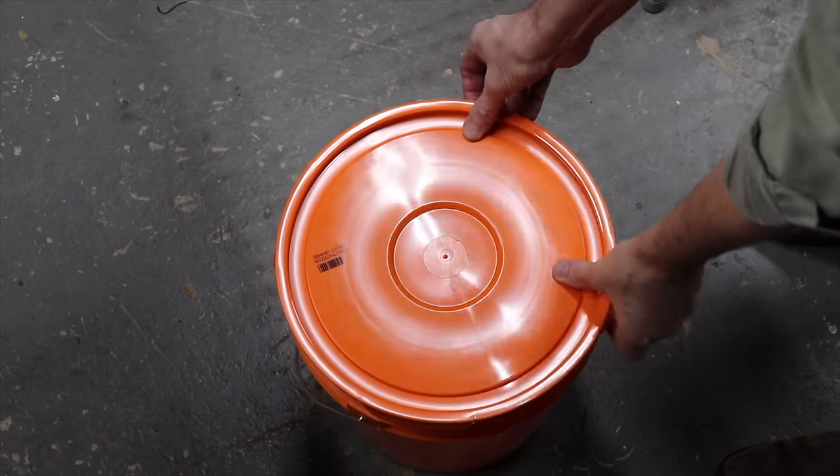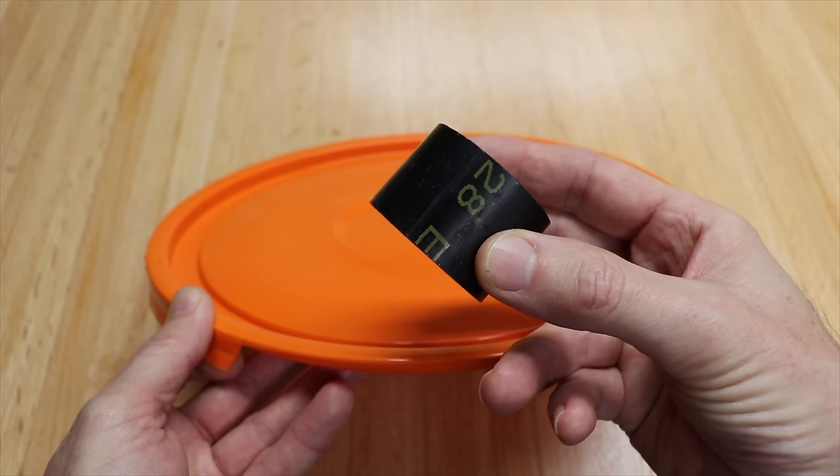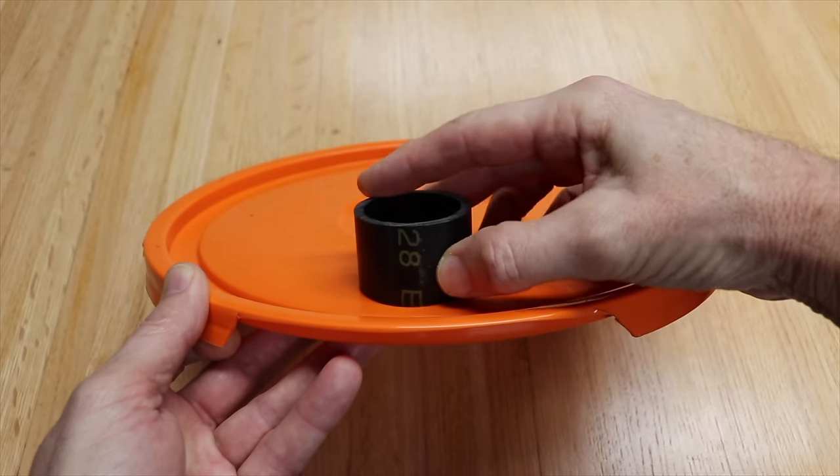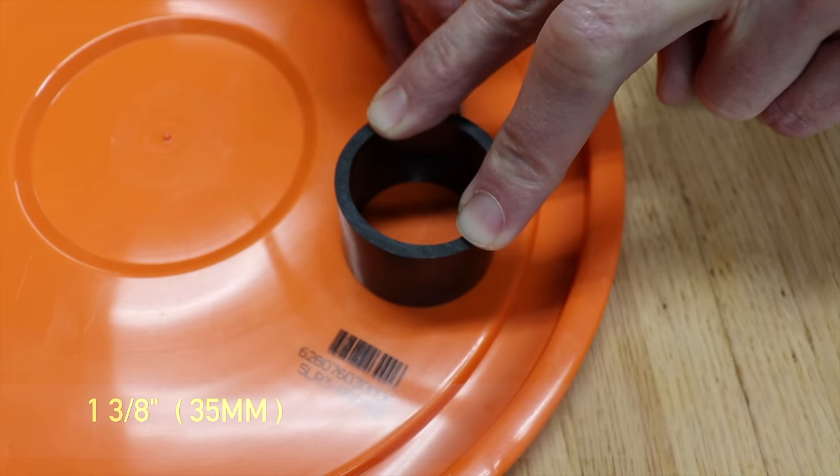And what we've created is a lid that's easy to get on and easy to get off. Now take one of the short pieces of pipe and place it in the middle of where you cut the piece out. And have it an inch and three-eighths from the side. Then take a scriber and mark the spot.